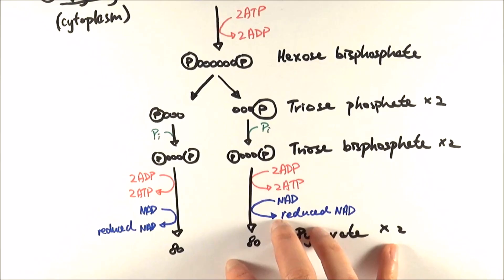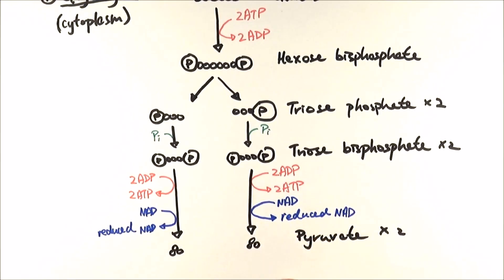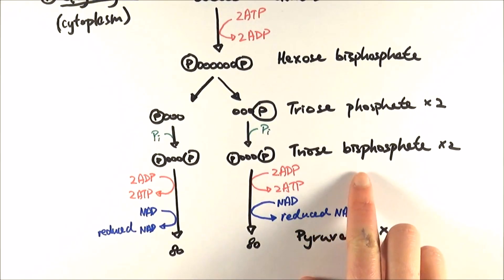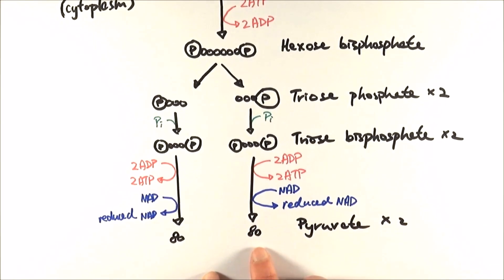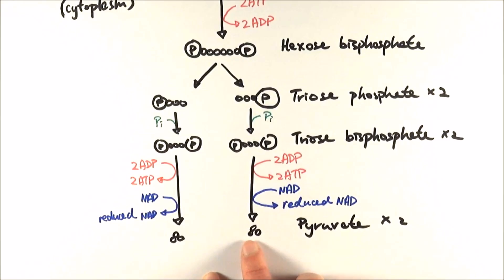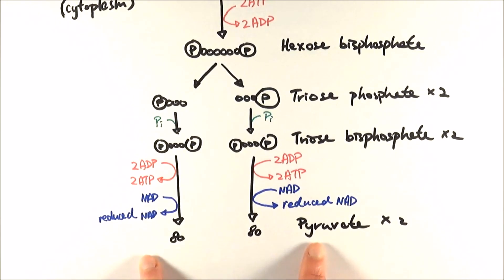Then an inorganic phosphate group comes along and is added to each of those molecules to become triose bisphosphate. Triose bisphosphate is extremely unstable, so almost immediately it undergoes these reactions. The 2 ADP comes along, steals those two phosphate groups to become 2 ATP, and NAD comes along and steals a hydrogen atom to become reduced NAD. Finally, we get pyruvate molecules, which are then transported into mitochondria for aerobic respiration.